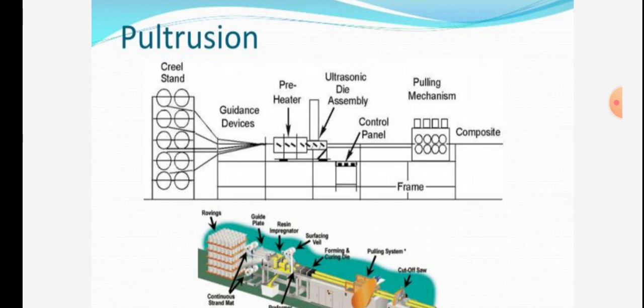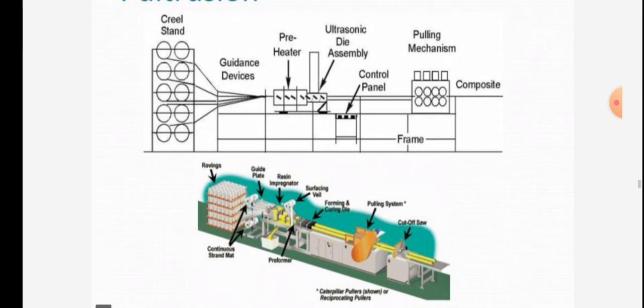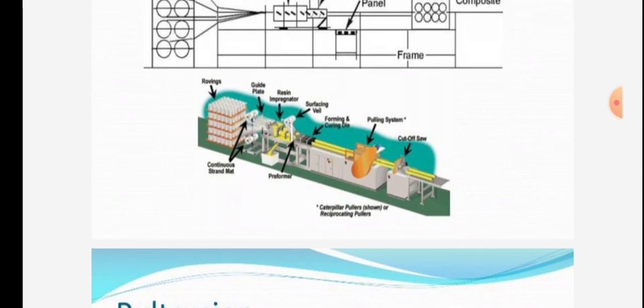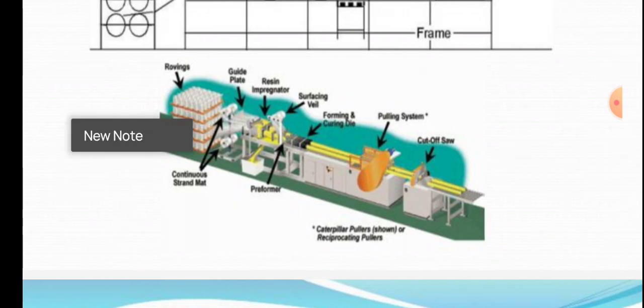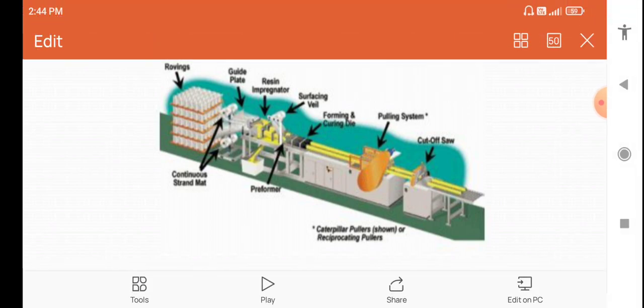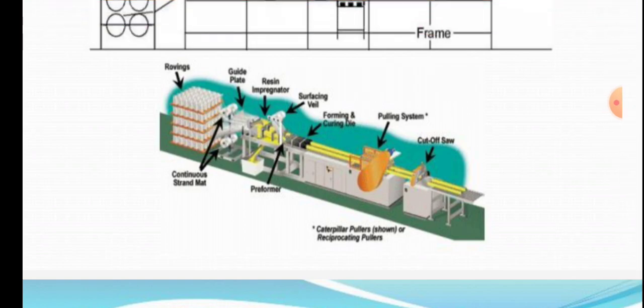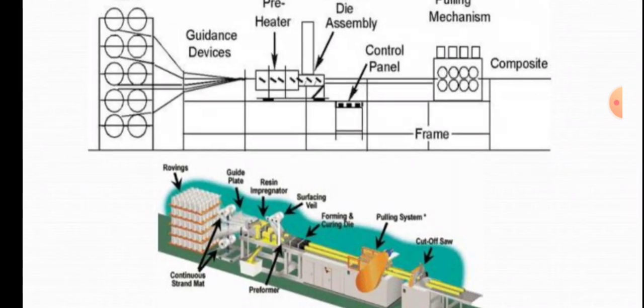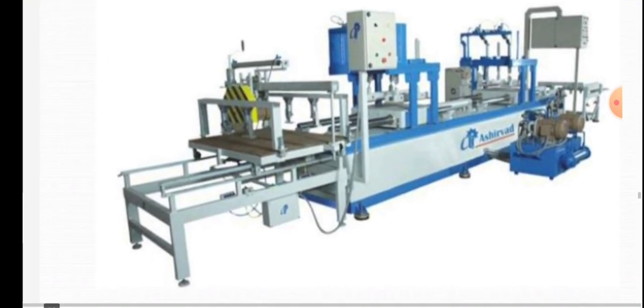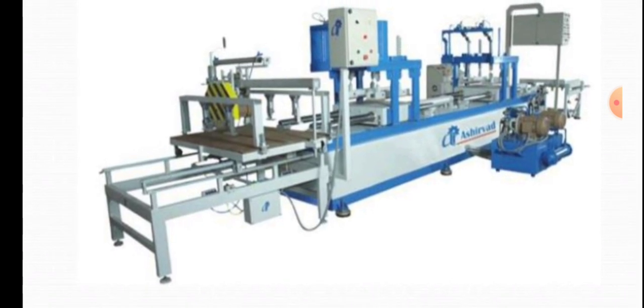In the pultrusion process, the diagram shows creels stand, guidance devices, pre-heater, ultrasonic die assembly, pulling mechanism, control panel, and composite frame. Roving, guide plate, resin impregnator, surface veil, forming and curing die, pulling system, and continuous strand mat are shown. The pultrusion process is done by the machine given in the figure.